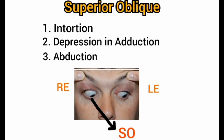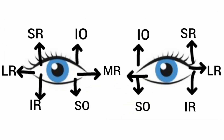The superior oblique helps the eye intort — it helps in the cyclo-torsional movement towards the nose. Its secondary function is depression in the adducted state, and its tertiary function is abduction. In the picture, the eye in an adducted and downward state shows the superior oblique depressing the eye during adduction. Remember: oblique muscles help in abduction and recti muscles help in adduction.